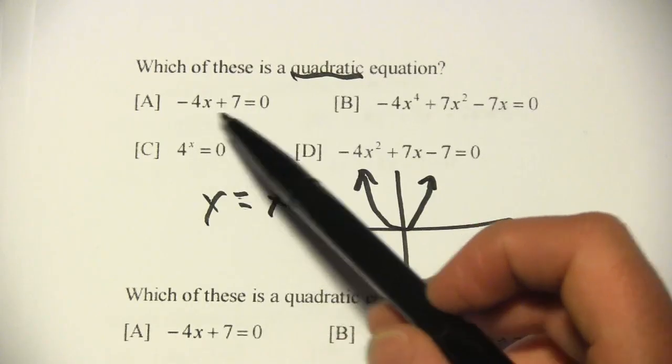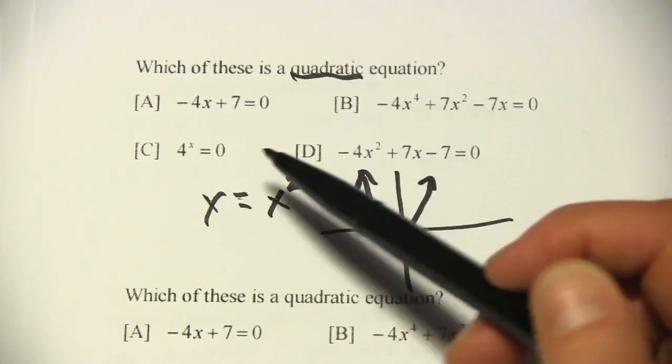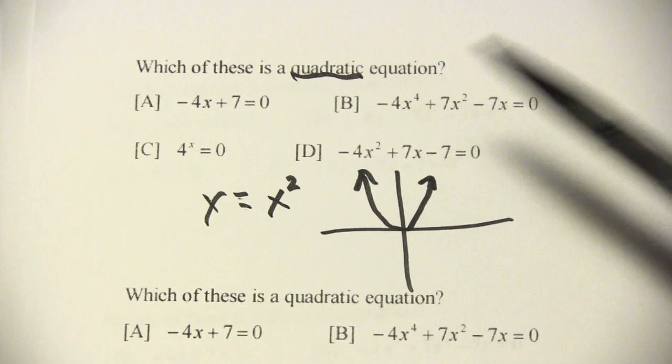Let's look at these equations. Negative 4x plus 7 doesn't have an x squared. That's actually a linear equation, the equation of a line.